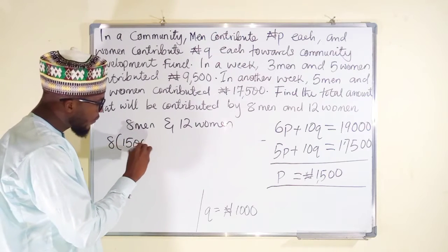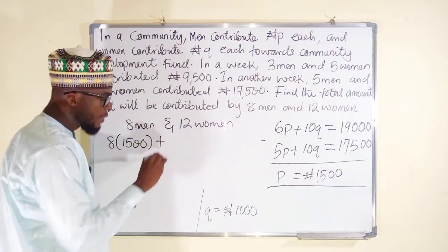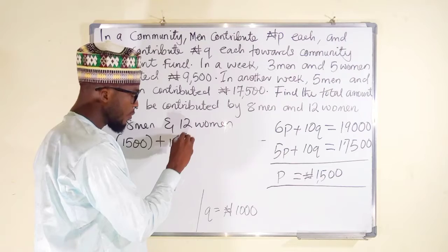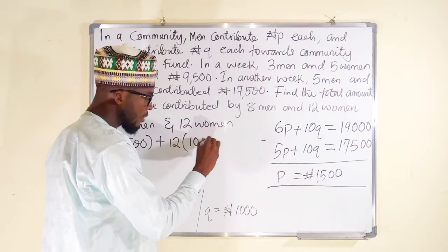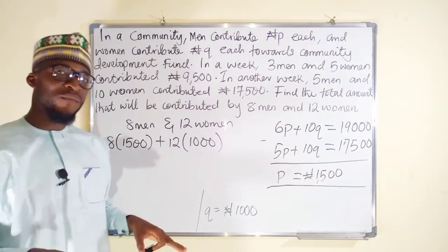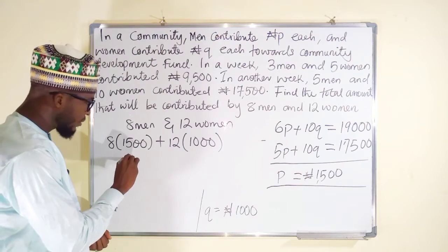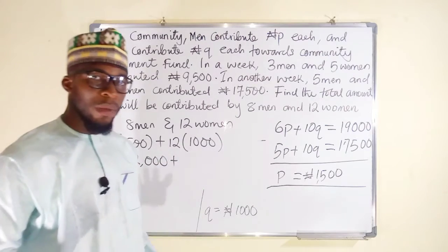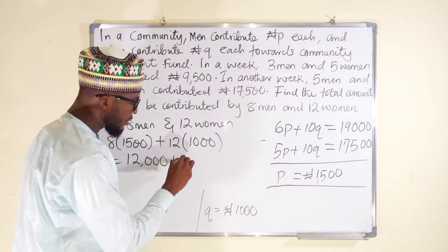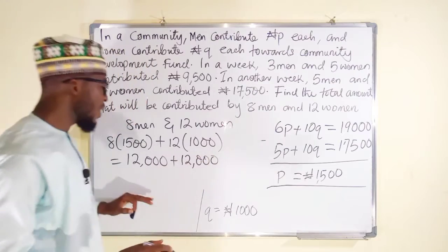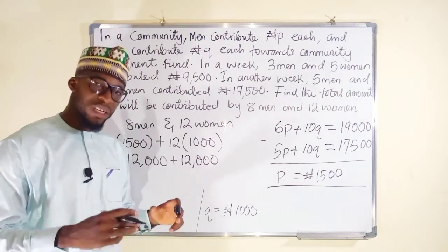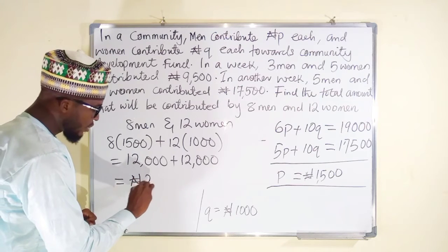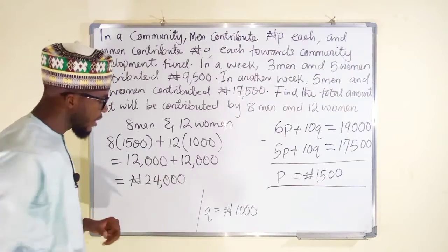For 8 men and 12 women: 8 men, each contributing 1,500 naira, gives 8 multiplied by 1,500. Plus 12 women, each contributing 1,000 naira, gives 12 multiplied by 1,000. 8 times 1,500 is 12,000. Plus 12 times 1,000 is also 12,000. Adding 12,000 and 12,000 gives 24,000 naira.